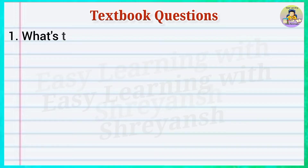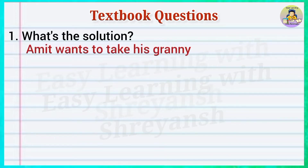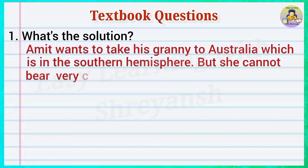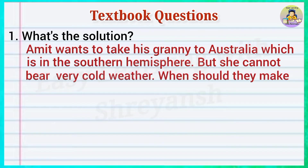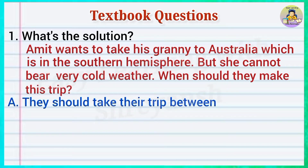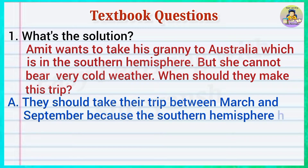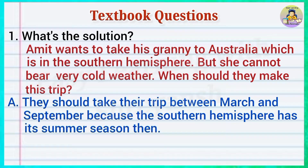Textbook question one: What's the solution? Amit wants to take his granny to Australia, which is in the southern hemisphere, but she cannot bear very cold weather. When should they make this trip? Answer: They should take their trip between March and September because the southern hemisphere has its summer season then.